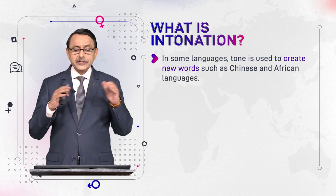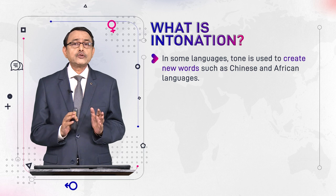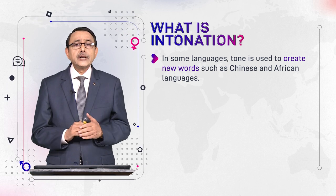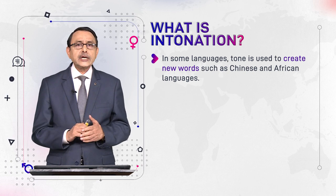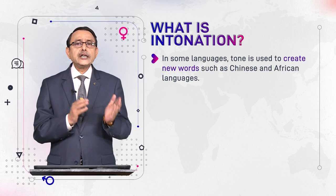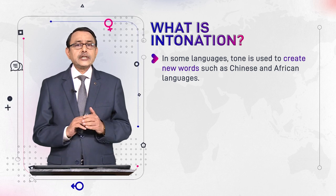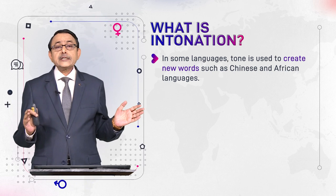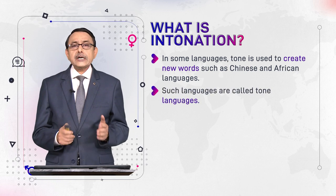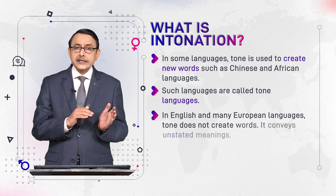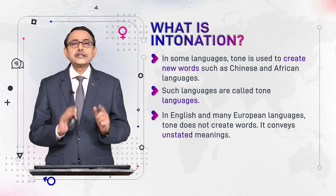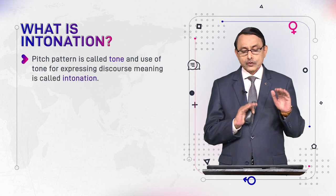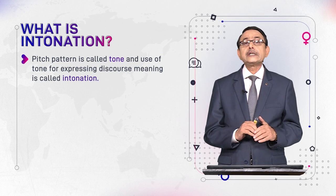In some languages, tone is used to create new words — these are called tone languages. In English, you use prefixes or suffixes to create new words; for example, adding 'un-' before 'kind' gives 'unkind.' But in tone languages like Chinese and African languages, new words are made by changing tone. In English and many European languages, tone does not create words — it conveys unstated meanings. Pitch pattern is called tone, and the use of tone for expressing discourse meaning is called intonation.